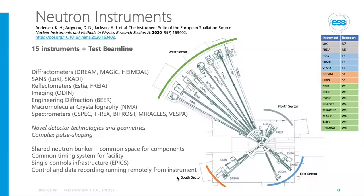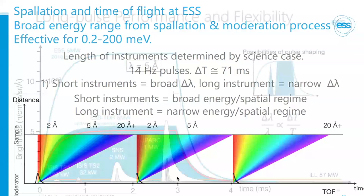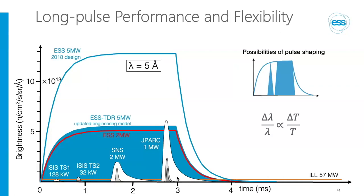By 2028, we should have 15 instruments: five diffractometers, five spectrometers, two reflectometers, two small-angle scattering instruments, and one neutron protein crystallography instrument. The length of instruments is determined by the science case — four very high-resolution instruments, like spectrometers, are at 160 meters from the target, while when we want high flux we have much shorter instruments. Because of the long pulse, we can use choppers to shape the pulse, which is very much exploited there.